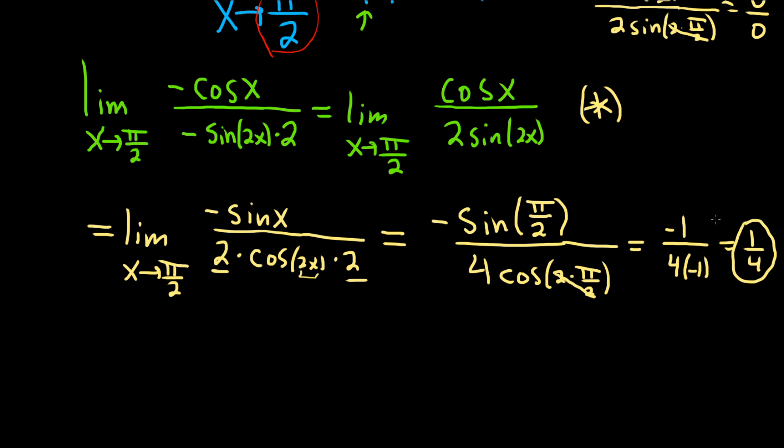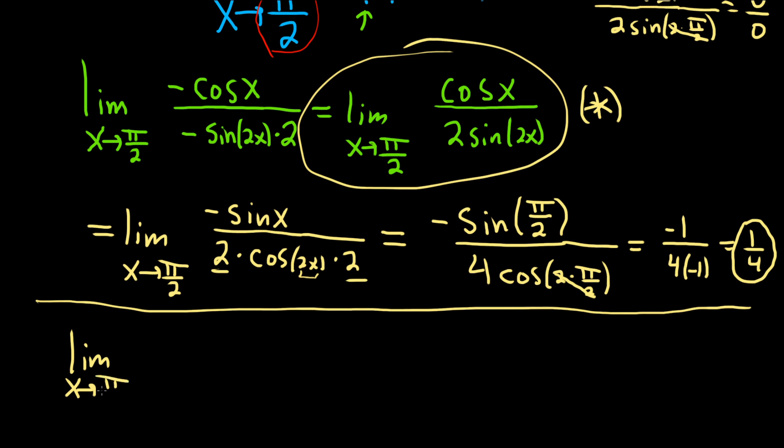Good stuff. Let's try to finish it the other way. I didn't tell you what it was, but I want to try it because I'm interested to see if it works. So let's take the limit as x approaches pi over 2 of cosine x over 2 sine 2x.